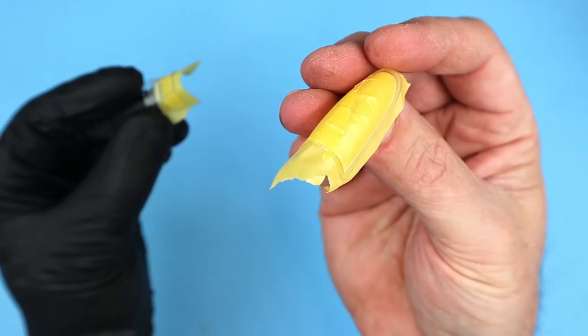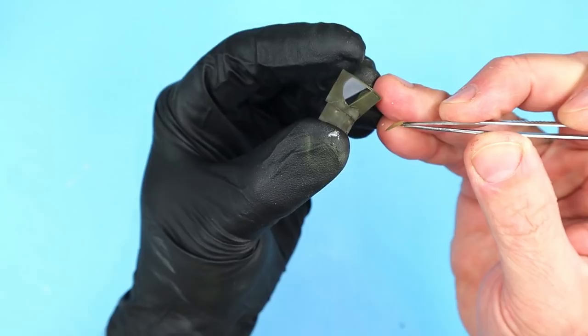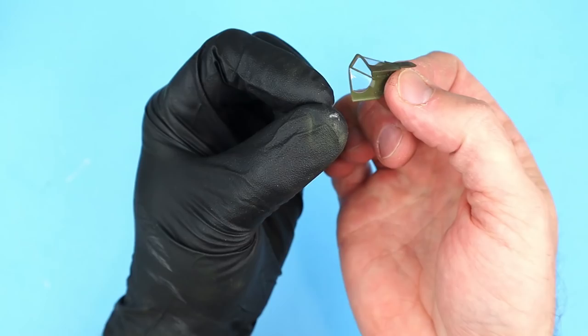I cut masks for the windscreen and canopy and sprayed those areas olive drab and black. After adding a little of the same weathering effects to those parts I sealed them with a flat coat and removed the masks.